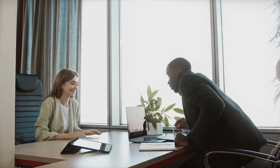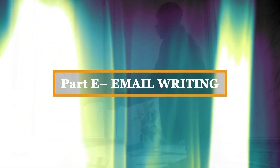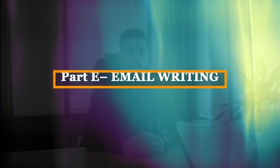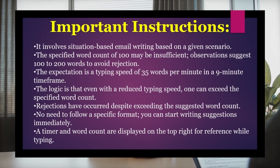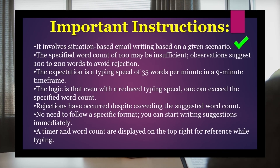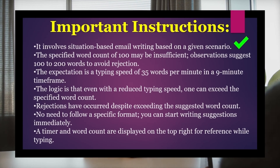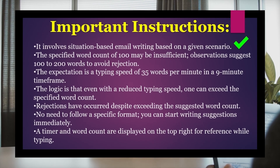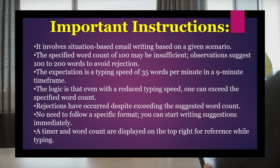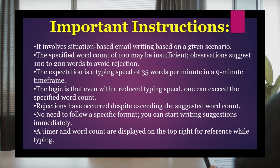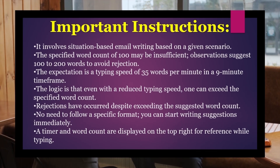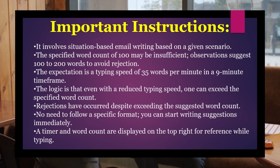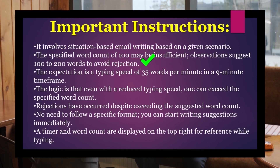Let's move on to our final section, section 5 — email writing. As the name suggests, this is a situation-based email writing section. You need to read a description of a situation and write an email addressing the issues discussed. I believe this is one of the easiest sections of the assessment. The test instruction says the email should be 100 words, but we have observed that those who write below 180 words may face rejection due to low word count.